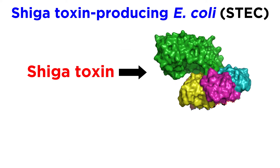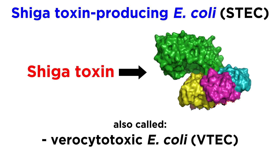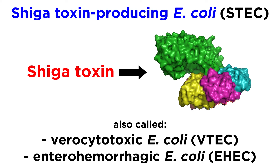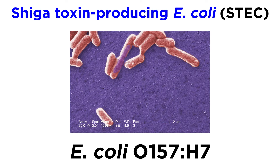Shiga toxin-producing E. coli cause disease by producing a toxin called Shiga toxin. And here's where it gets more confusing — Shiga toxin-producing E. coli are sometimes also called verocytotoxic E. coli (VTEC) or enterohemorrhagic E. coli (EHEC). In the United States, the most common serotype of STEC is E. coli O157:H7, which is the type they're usually talking about on the news, like when there's a widespread romaine lettuce recall.